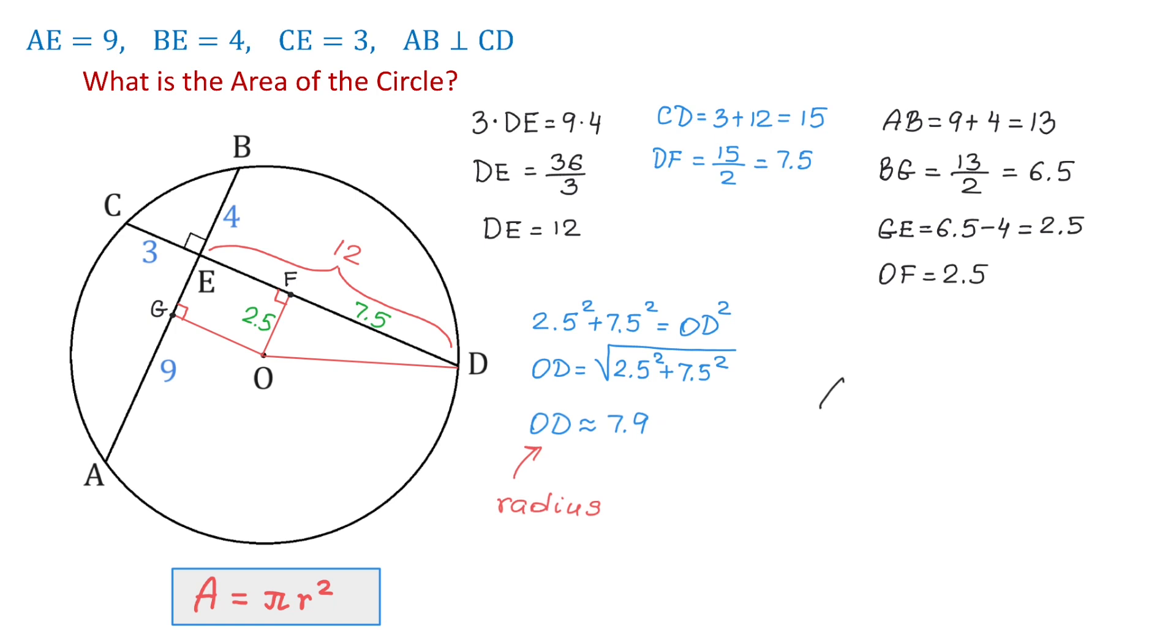And now, the area is pi times 7.9 squared, which equals approximately 196 square units. The problem is completed. Thank you for watching!